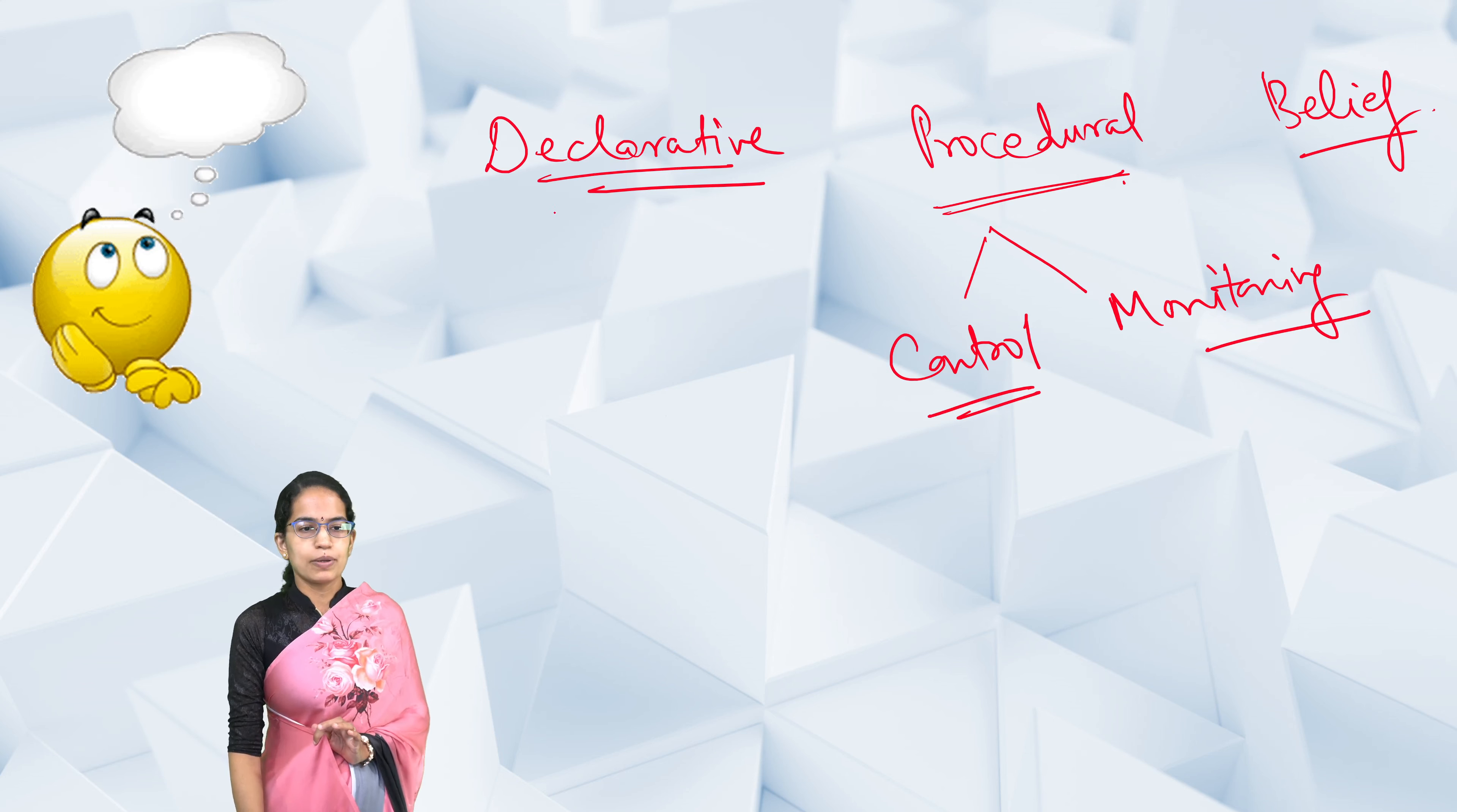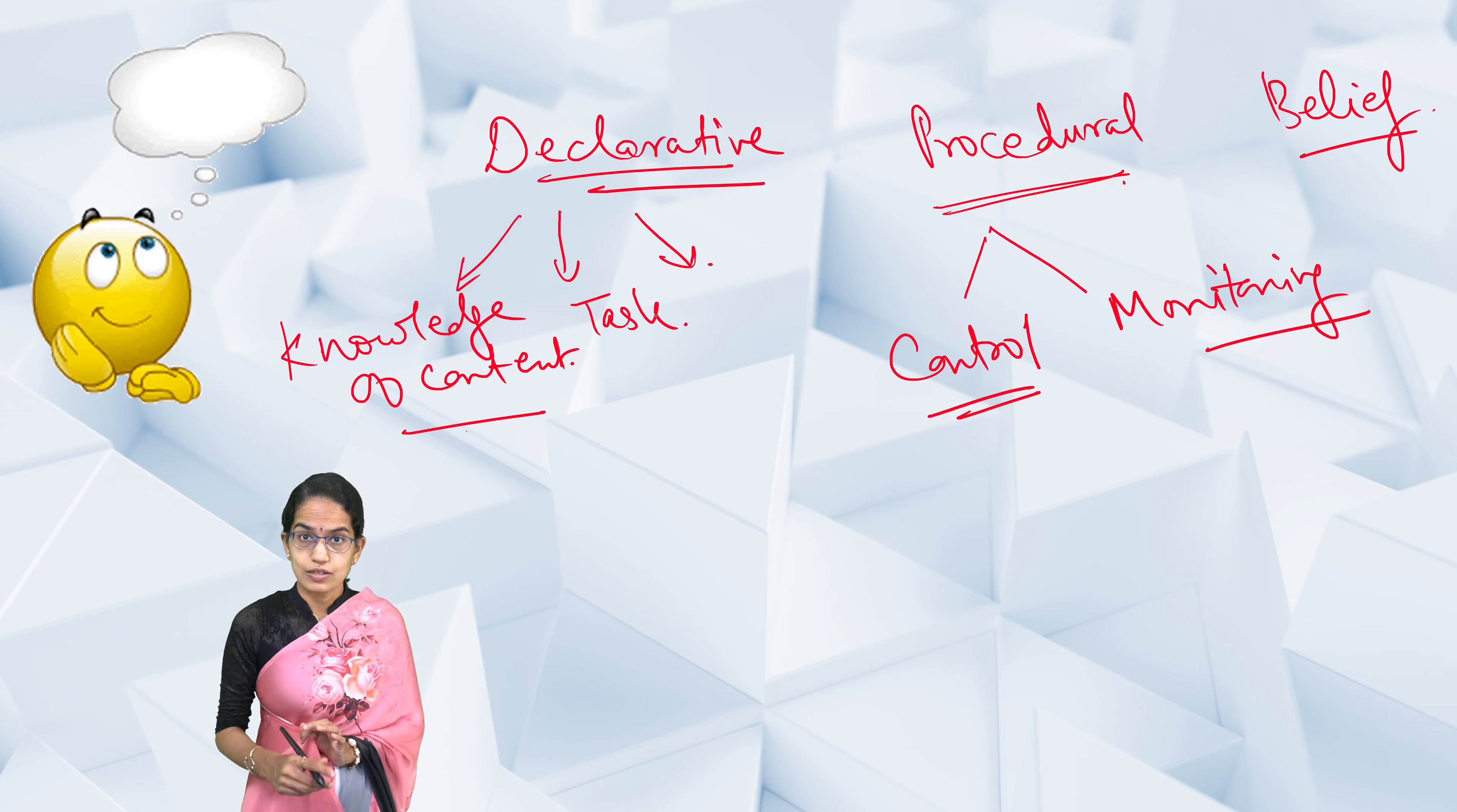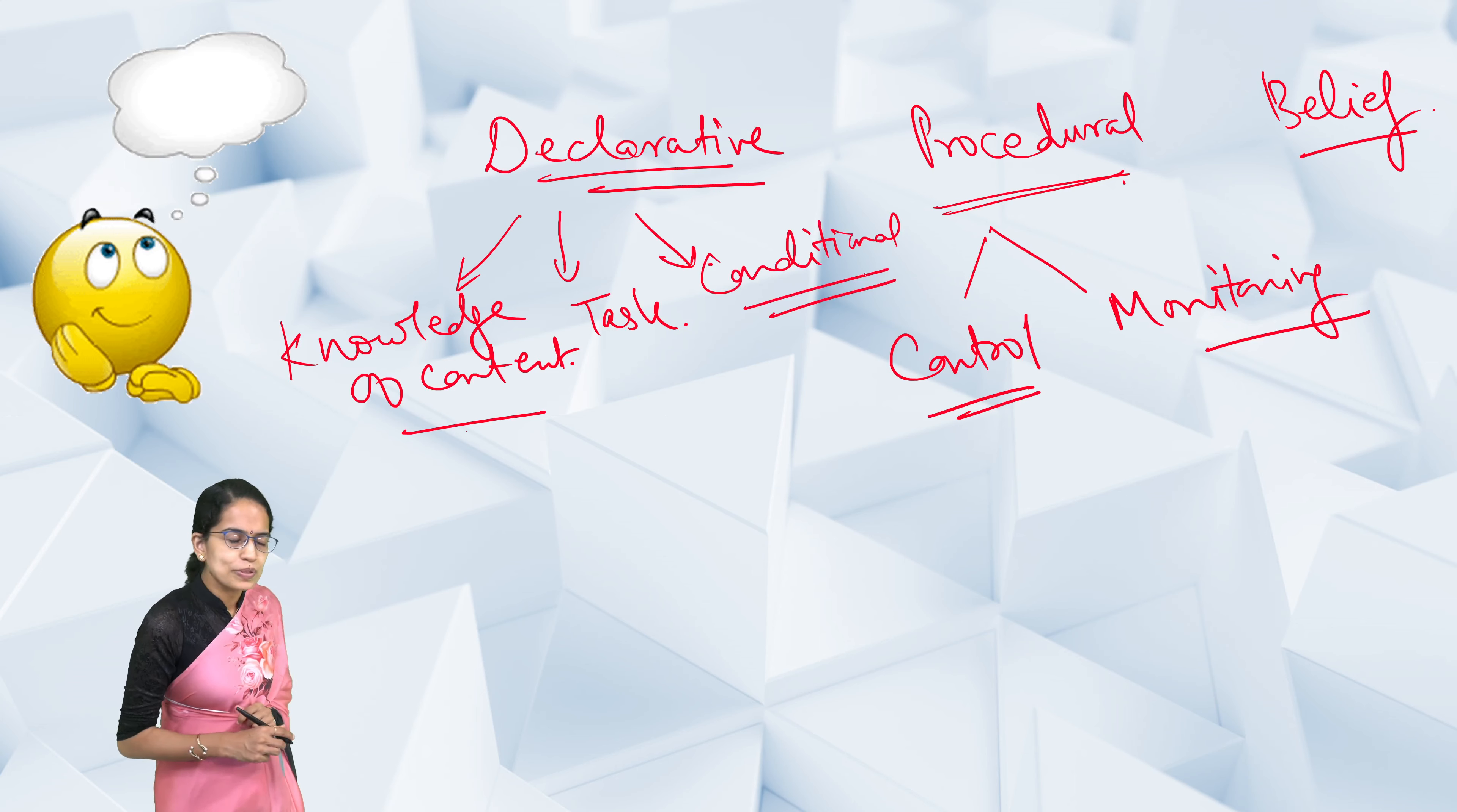Under declarative metamemory, where we focus on evaluating the concepts of memory, there are three elements. First is knowledge of content—we must be very well versed with the content. Next is knowledge about the task: what is the task, and why do we want to pursue and do that task? Finally, there's conditional knowledge, which is knowledge required for optimum performance.